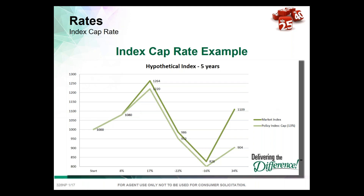Typically a product will have either a cap or a par rate — those are the two most common methods to limit or control the upside. The most popular method is a product with a cap set at 9%, 10%, 11%, 12%, with the participation rate at 100%. That's the most common index segment design. There are other examples where you may have no cap and a lower participation rate, or a lower cap with a participation rate even higher than 100%.